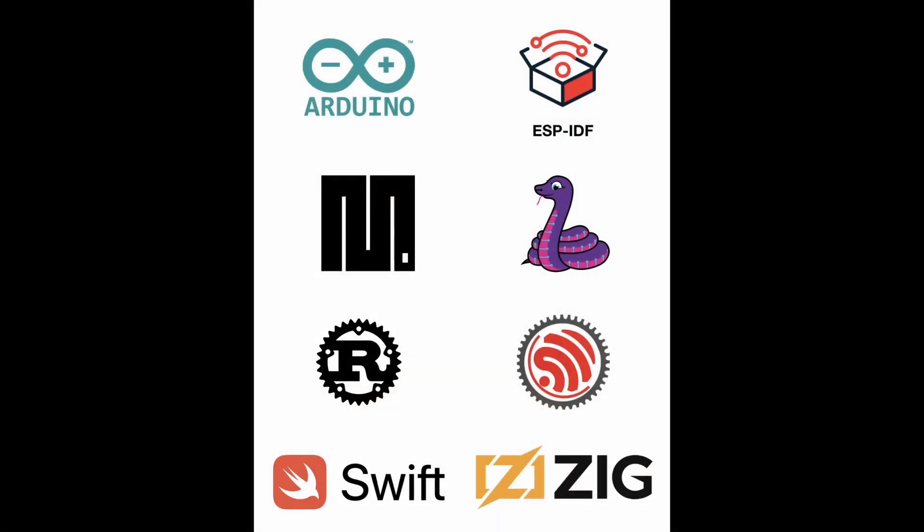Beyond Arduino, C/C++ with ESP-IDF, and Rust, there are more programming languages you can use with ESP32. These include Python-based languages like MicroPython or the Adafruit version CircuitPython, both with great communities. Let's also mention Swift, announced during WWDC 2024, and Zig, which is gaining popularity recently. And there are many more.